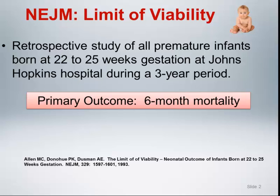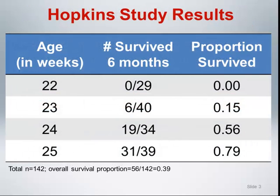The primary outcome of the study was six-month mortality. The study results are summarized in a table and are presented by gestational age. In total, 142 infants were studied with an overall survival proportion of 0.39.